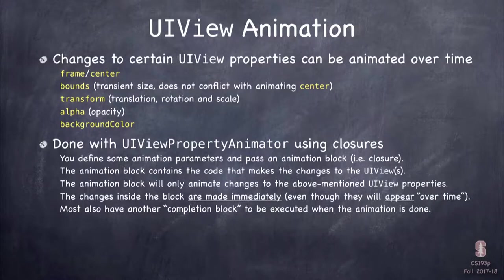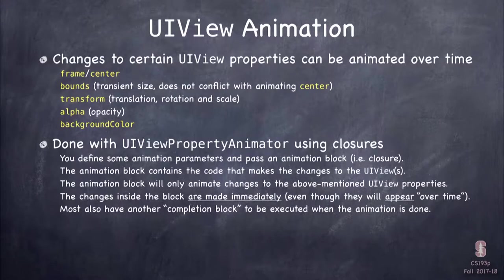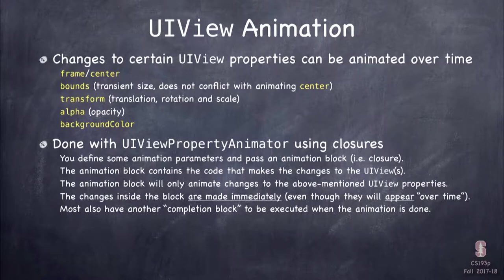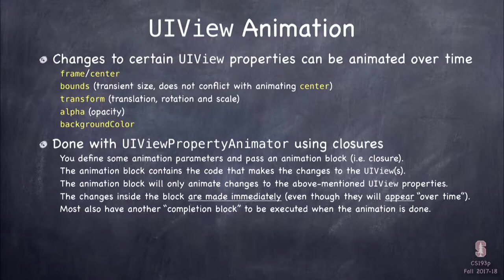The way this works is with a class called UIViewPropertyAnimator, and it works with closures. You set up properties on your view property animator — how long it's going to take, what curve it uses, whether you want a delay — then you give it a closure. Inside that closure is just code that modifies those properties, and it will animate those changes in the fashion you described.